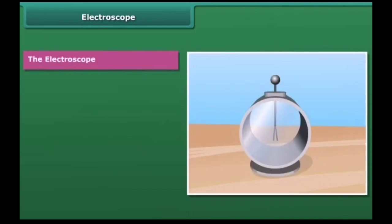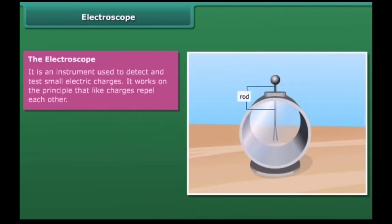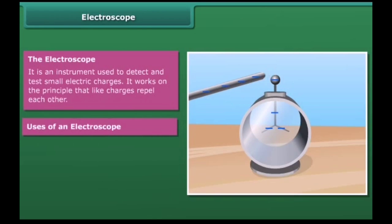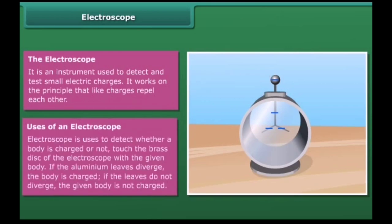The electroscope. It is an instrument used to detect and test small electric charges. It works on the principle that like charges repel each other. Uses of an electroscope: electroscope is used to detect whether a body is charged or not. Touch the brass disc of the electroscope with the given body. If the aluminum leaves diverge, the body is charged. If the leaves do not diverge, the given body is not charged.